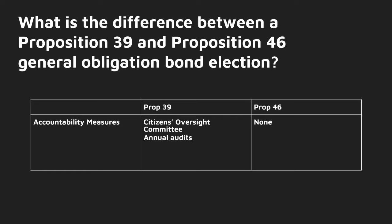On accountability measures, Prop 39 has two requirements: one for a Citizens Oversight Committee and also annual audits on bond proceeds, whereas Prop 46 has no such requirement.